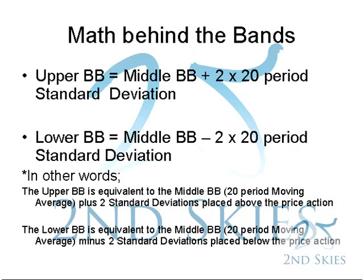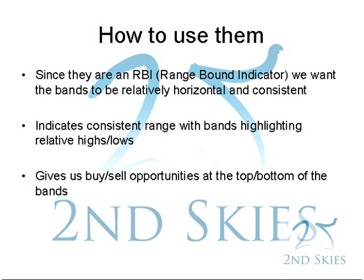Regarding the general mathematics — it's not critical to understand them completely, but in simple terms: the upper Bollinger Band equals the middle Bollinger Band, which is a 20-period moving average, plus two standard deviations placed above the price action. The lower Bollinger Band is just the opposite — a 20-period moving average minus two standard deviations, placed below the price action. Since they are a range-bound indicator, we want the bands to be relatively horizontal and consistent, causing the pair to oscillate between a floor and a ceiling, highlighting relative highs and lows and showing clear places to buy and sell.